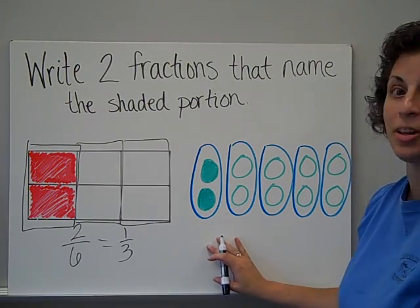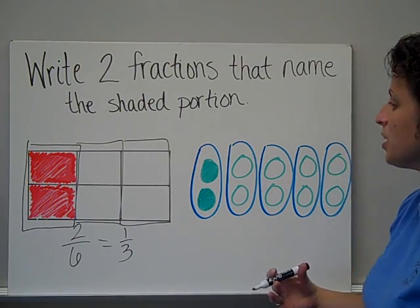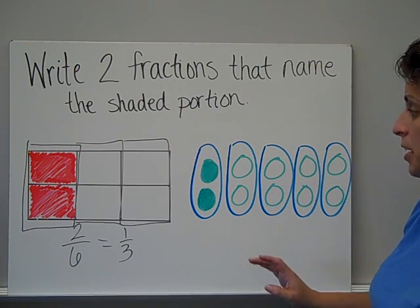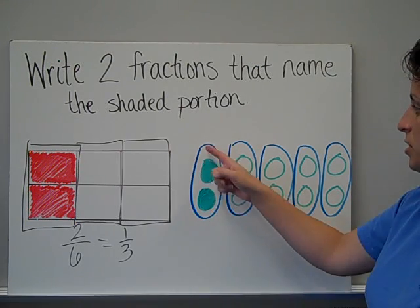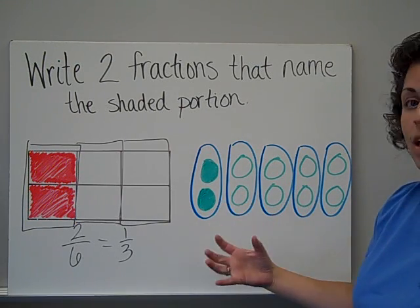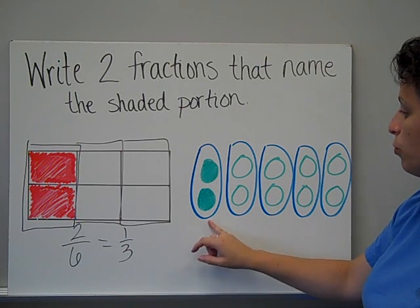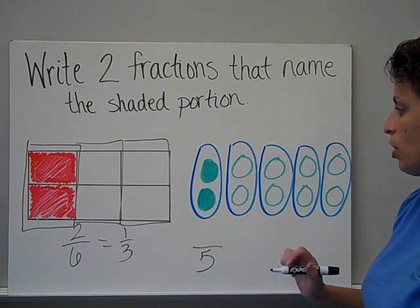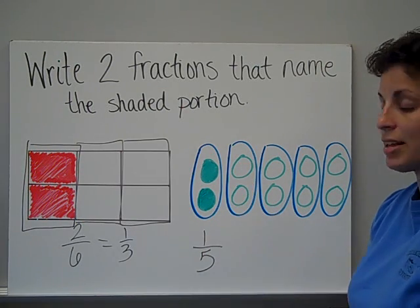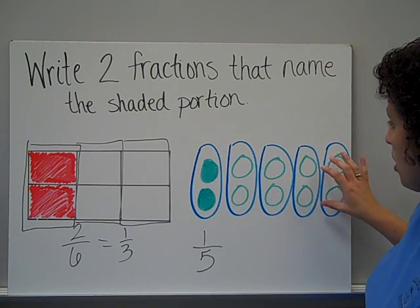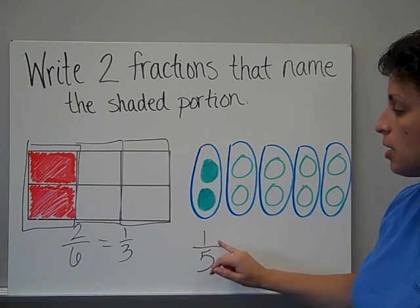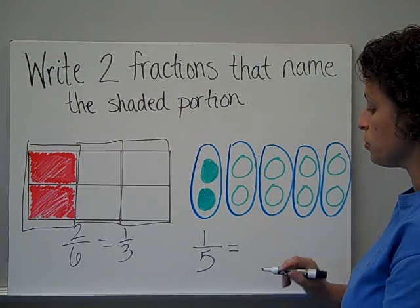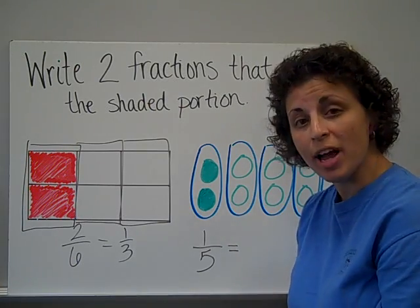This one is totally different. This time, instead of having a rectangle that's been cut into parts, I have what is called a set. Now, this set has been divided into groups, I can see, because I have some blue ovals here. And so if I'm looking at this set as ovals, I see that there are five ovals. Out of those five ovals, one of them has circles that are shaded green. So this model right here could represent one-fifth. Now, I started by looking at the blue ovals, and I need to come up with another equivalent fraction, though.